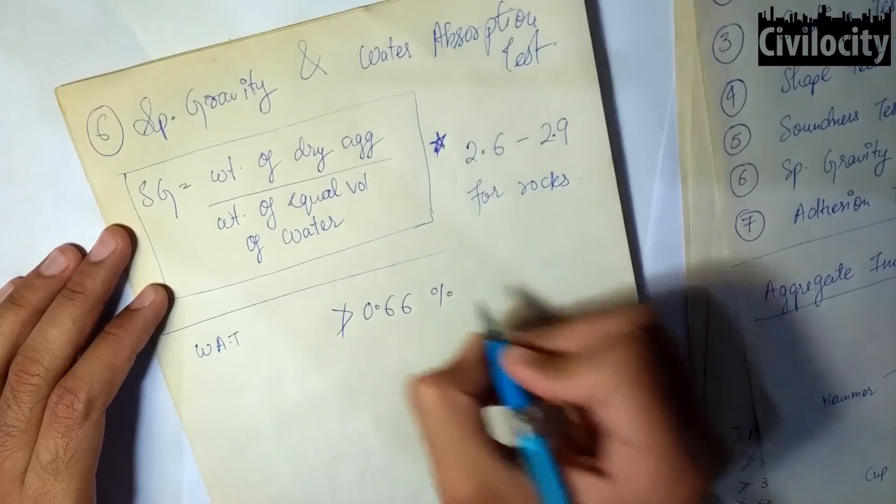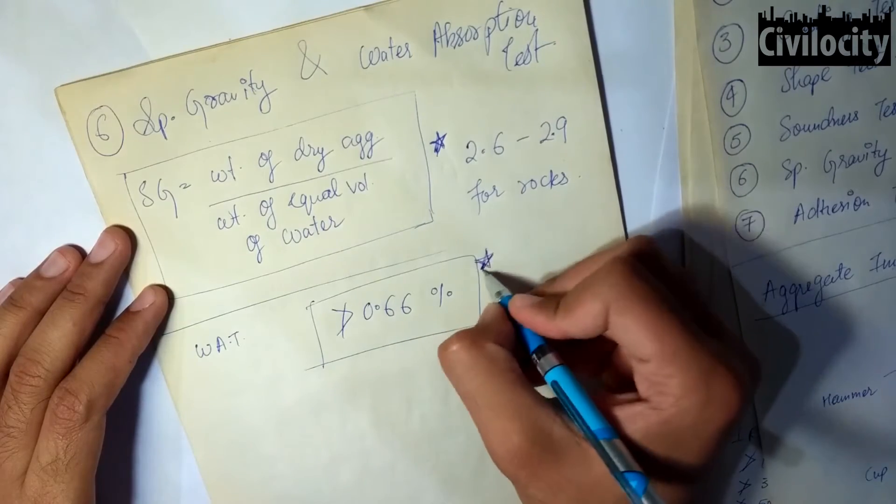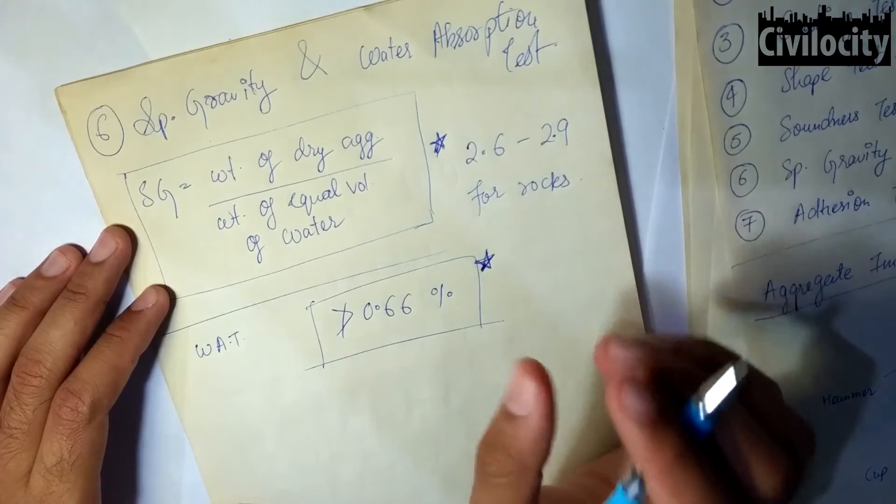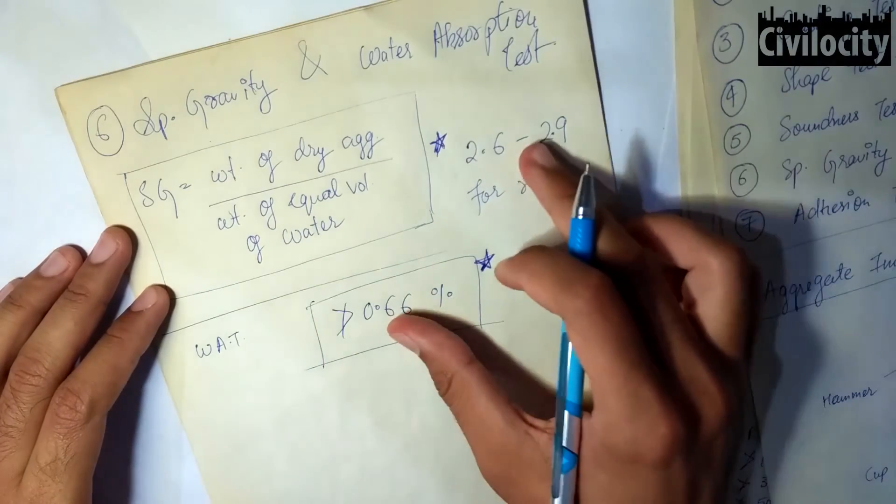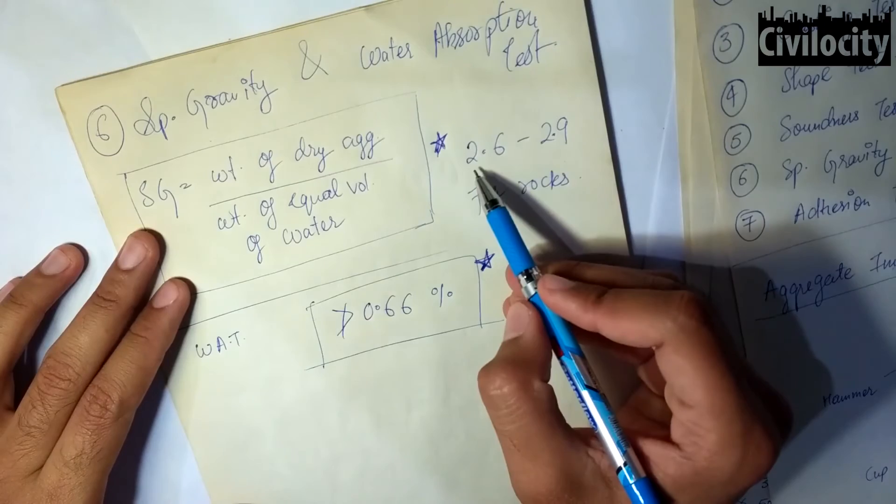We need not know much about these tests, only these two values are important: the specific gravity lies between 2.6 to 2.9 for rocks, and the water absorption in aggregates should not contain more than 0.6 percent of water in them.